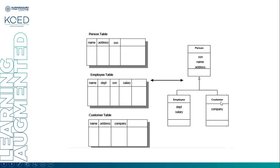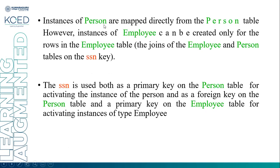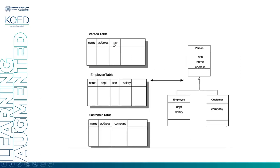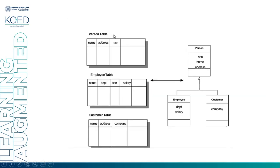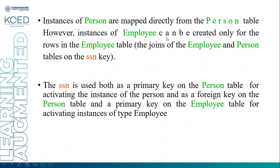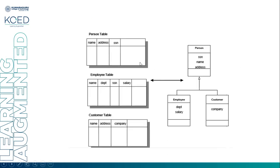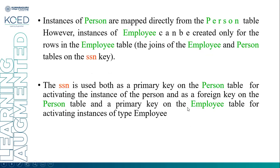If you take a customer, which contains the name, address, and company — customer is having a company name, address, and related from the person table. Instance of persons are mapped directly to the person table. The person table is directly mapped to the person class. The instance of employee will be created for the rows in the employee table only.